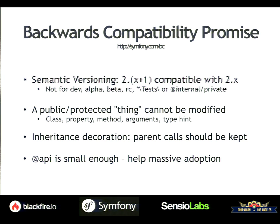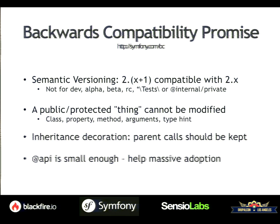Semantic versioning means that any 2.x+1 version is compatible with the previous 2.x. That's not the case for development versions, alpha, beta, release candidates, or anything under the test directories. We also don't need to maintain backward compatibility for any class or method tagged with @internal, or for private stuff obviously. We do have some public methods tagged with @internal because of PHP 5.3 limitations.